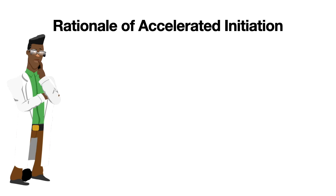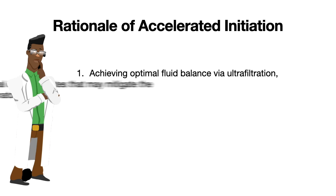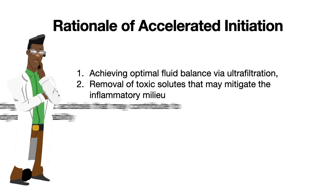What is the rationale for doing an accelerated initiation of dialysis in acute kidney injury? This is done to achieve an optimal fluid balance via ultrafiltration, removal of toxins resulting in mitigation of the inflammatory milieu, and correcting metabolic acidosis which may be contributing to hemodynamic instability.